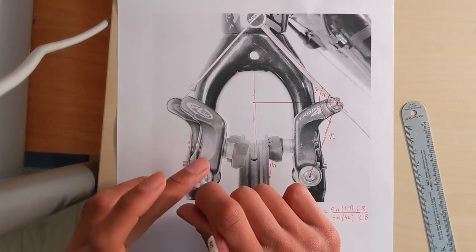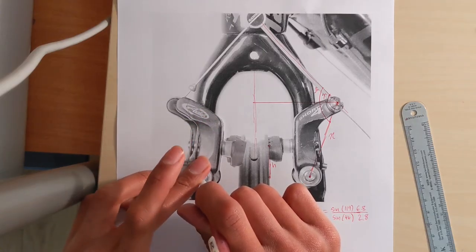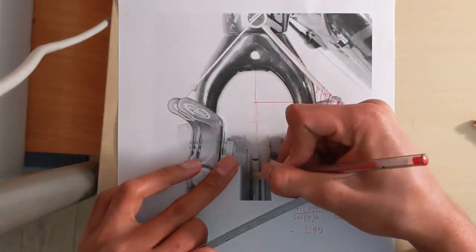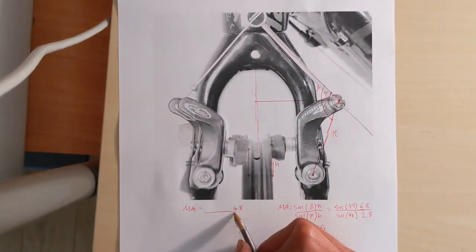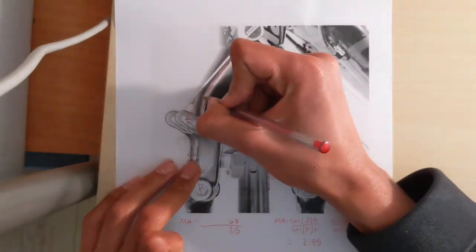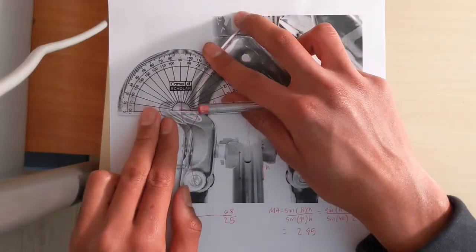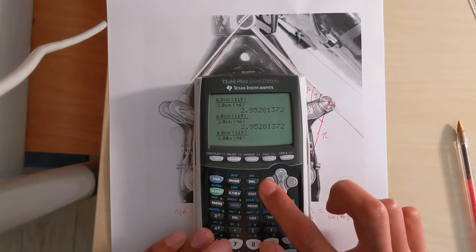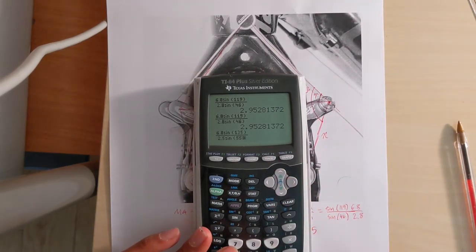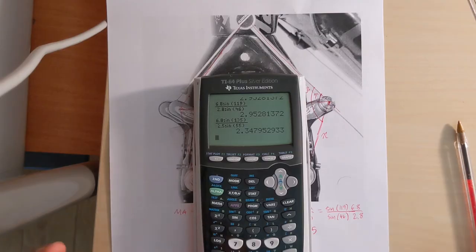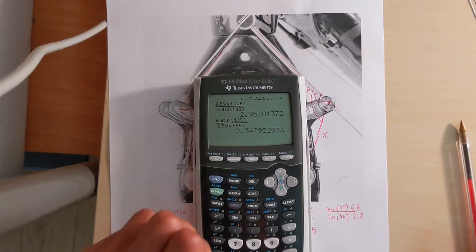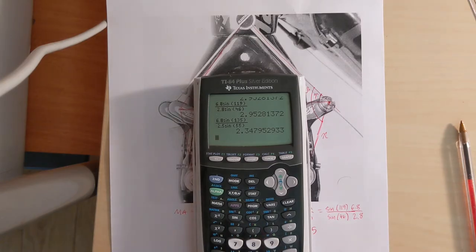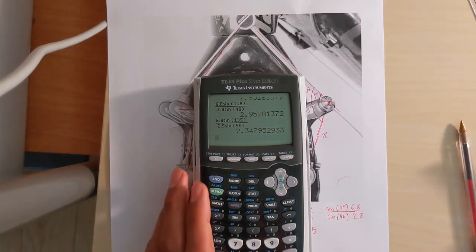Let's calculate the mechanical advantage for this position. So we're just going to do the same calculation but with the smaller h and larger angles gamma and beta. Our mechanical advantage reduces in the low profile brake as we move through the range of action, which means as your brake pads get worn down or as you squeeze your lever harder and your brake pads compress, your mechanical advantage reduces. This is interesting.